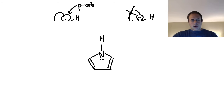To summarize: lone pairs are found in hybrid orbitals when they cannot participate in resonance. A lone pair will go into a p orbital when it has the ability to participate in resonance and conjugate with the system to delocalize electron charge. This information is relevant for aromaticity lectures, but also useful more generally when trying to determine hybridization of atoms that have lone pairs, since that can be confusing for students.